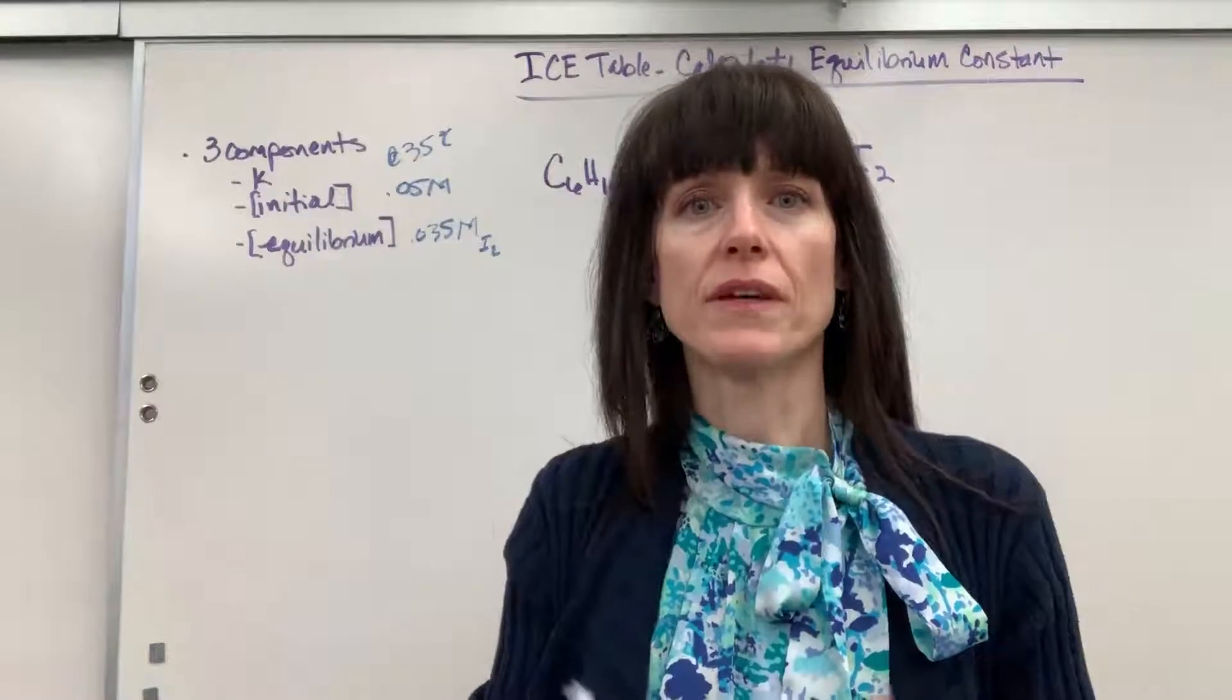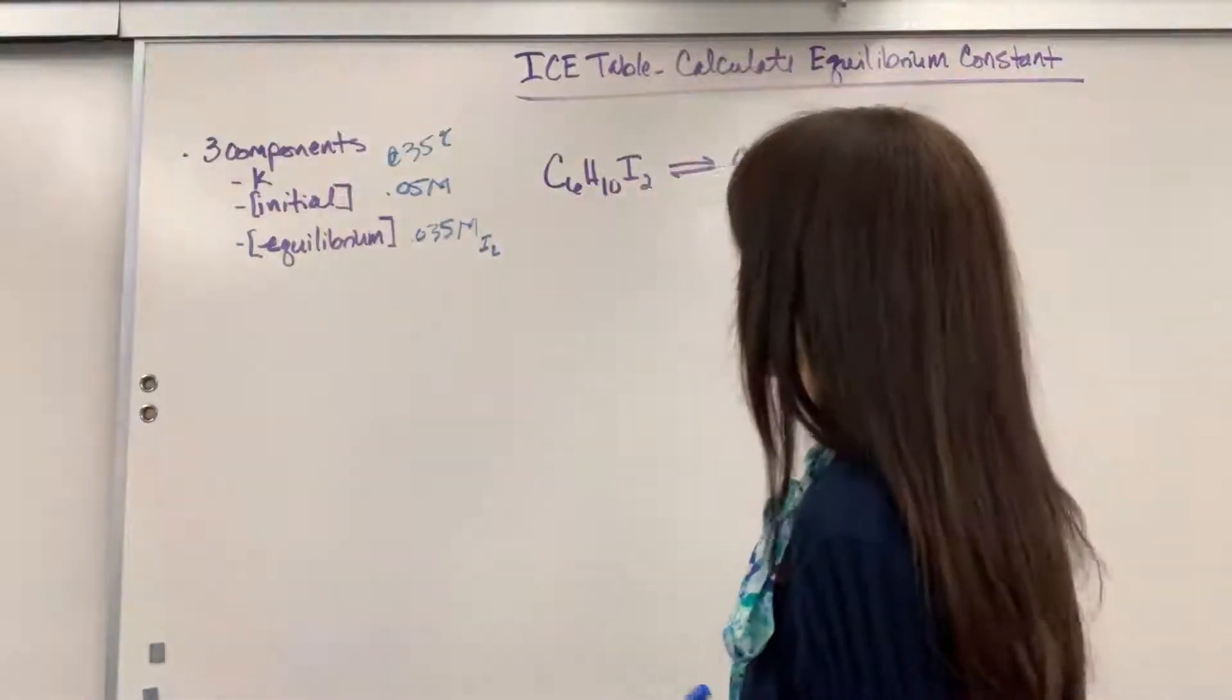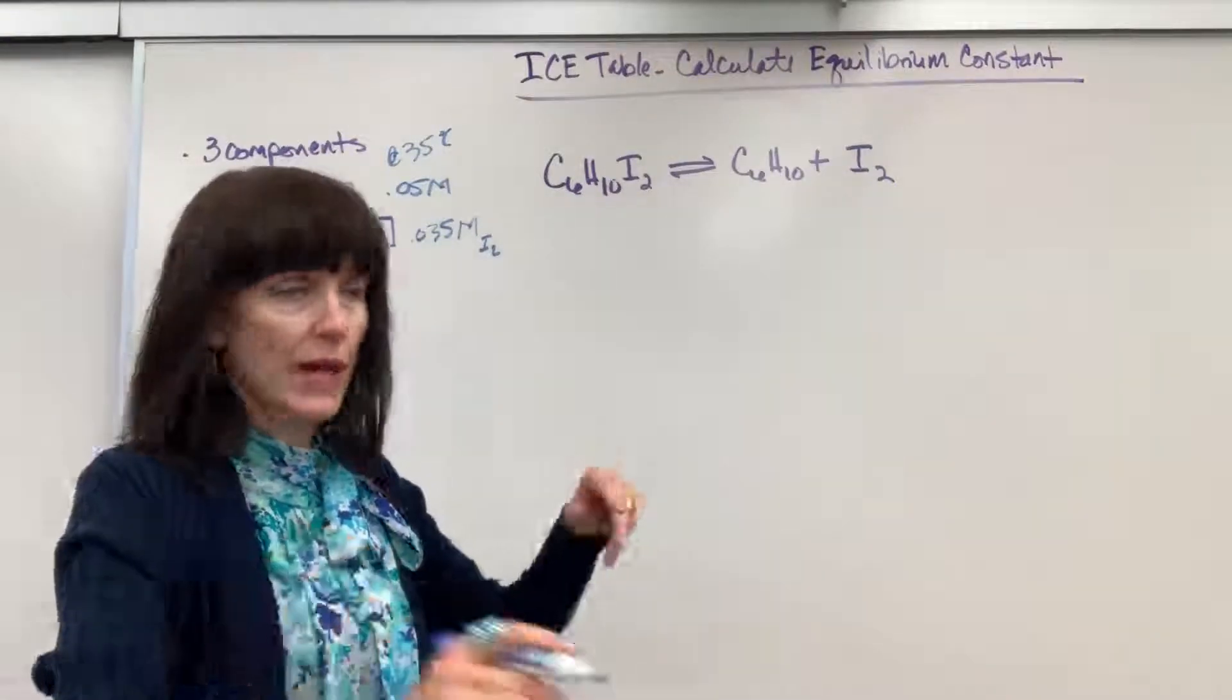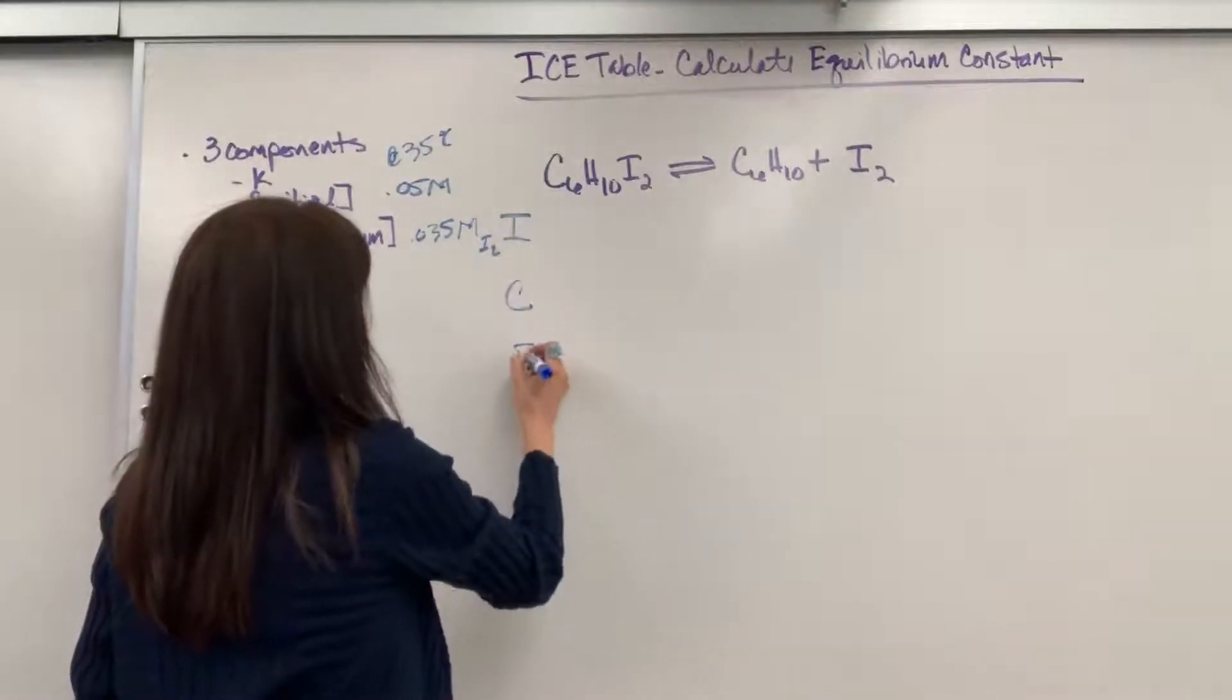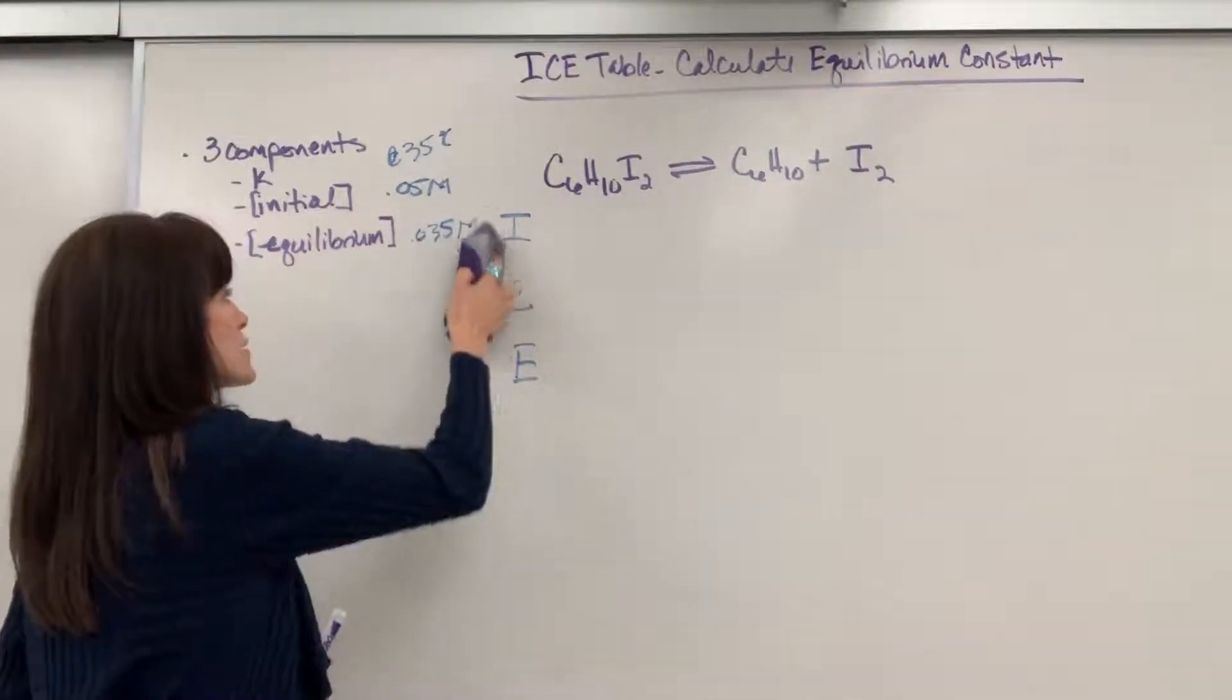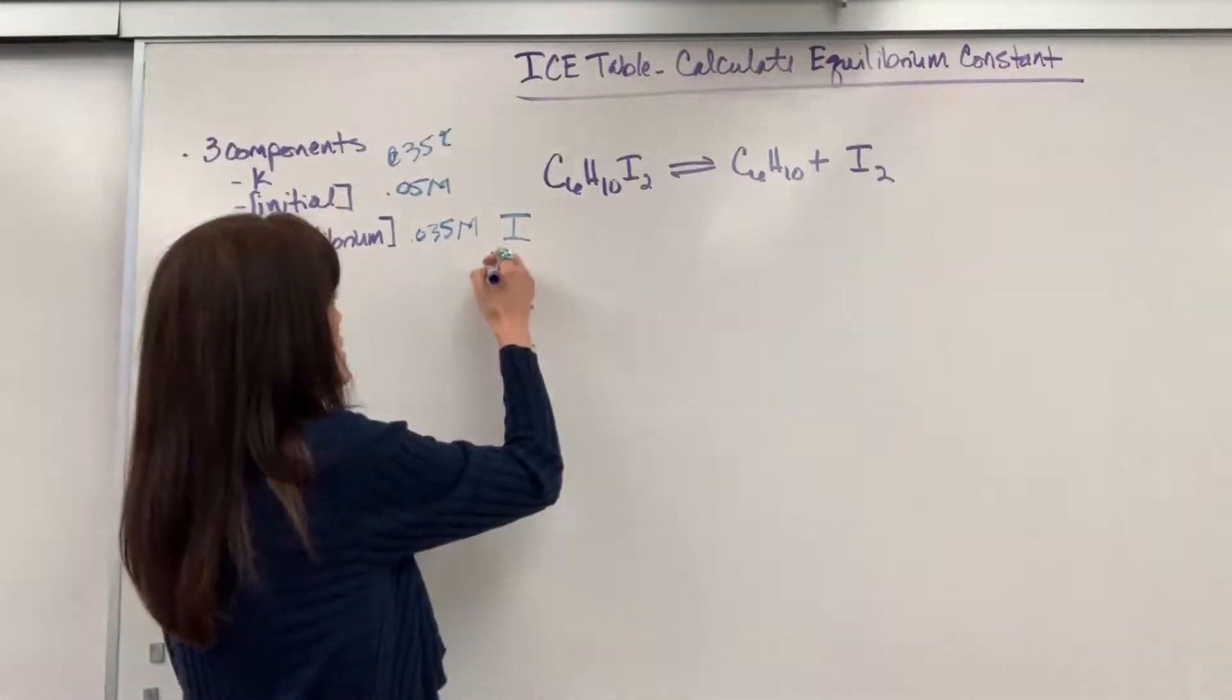They did give us an initial concentration. They did give us an equilibrium concentration, which means we can find K. So that's where I start my students off, is get used to looking for those three components. Now, how do you set up an ice table? I write my chemical equation, and then take a line. I know it's going to feel like you take a lot of paper. It's okay. Take a line for each of these. You're going to do I, C, and E. The I stands for initial.